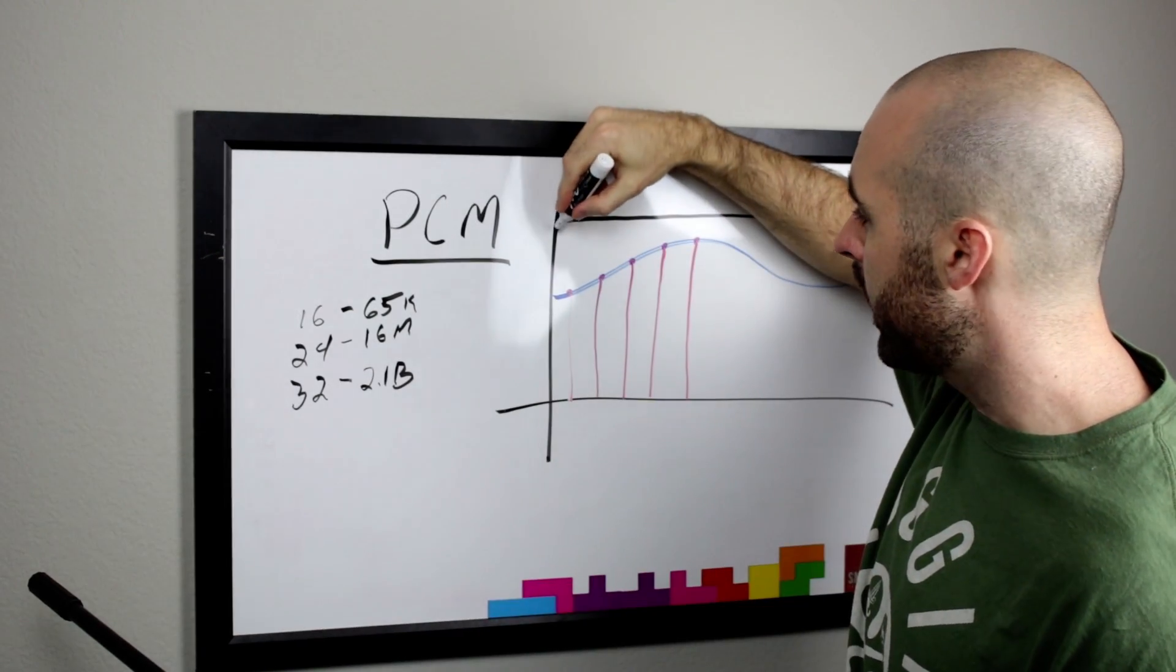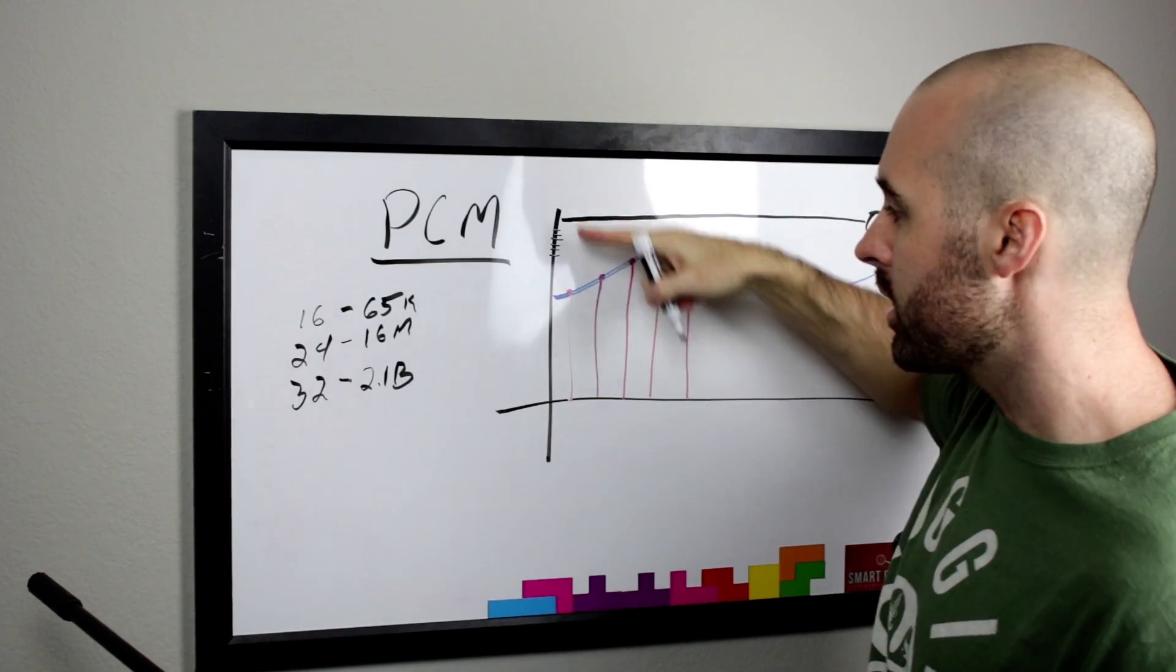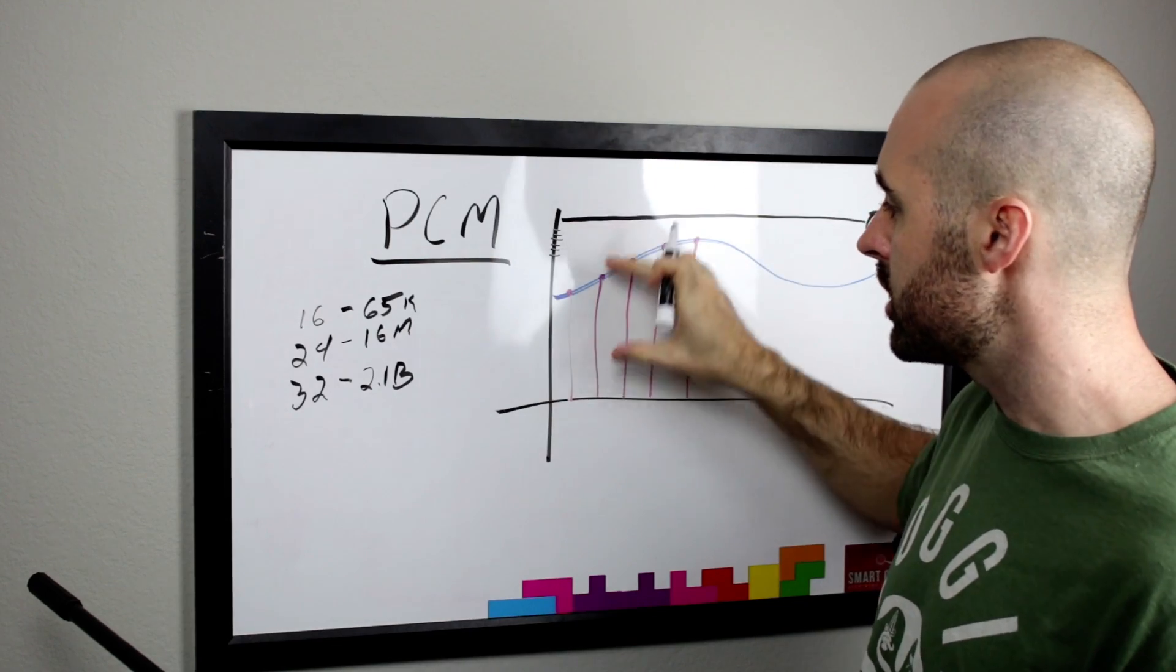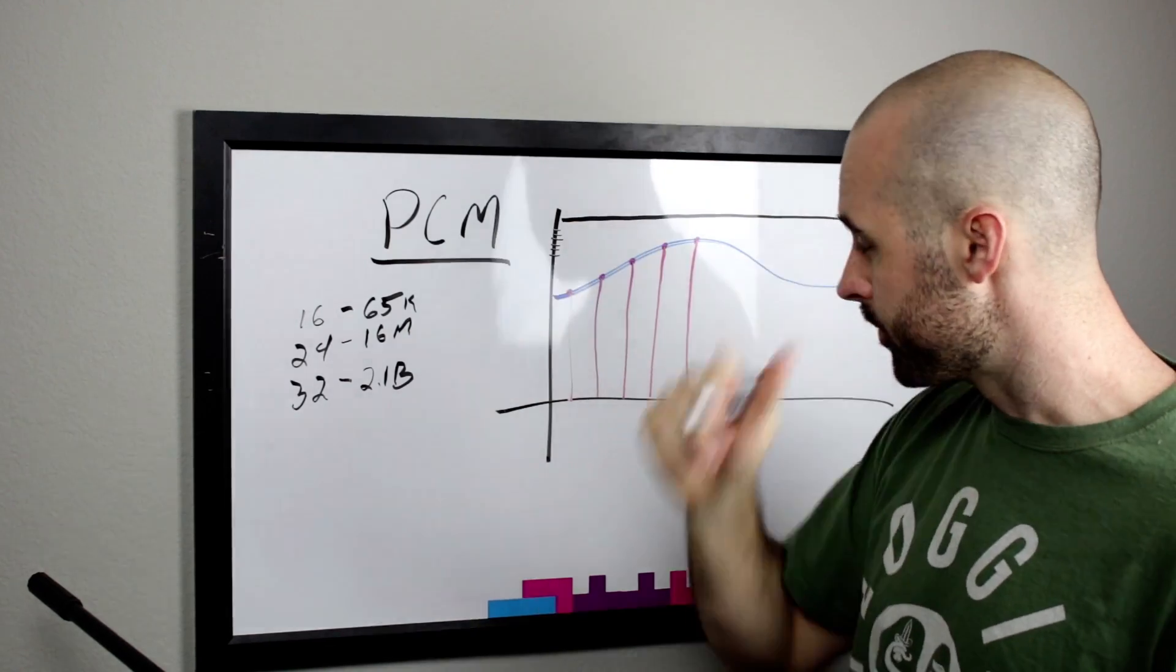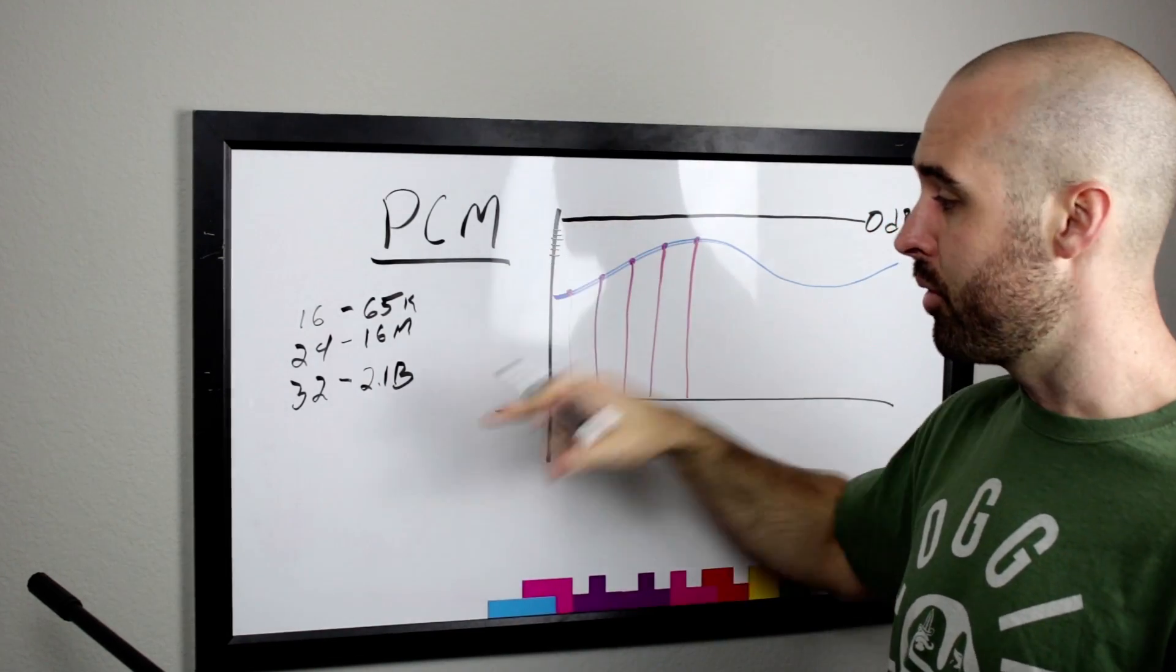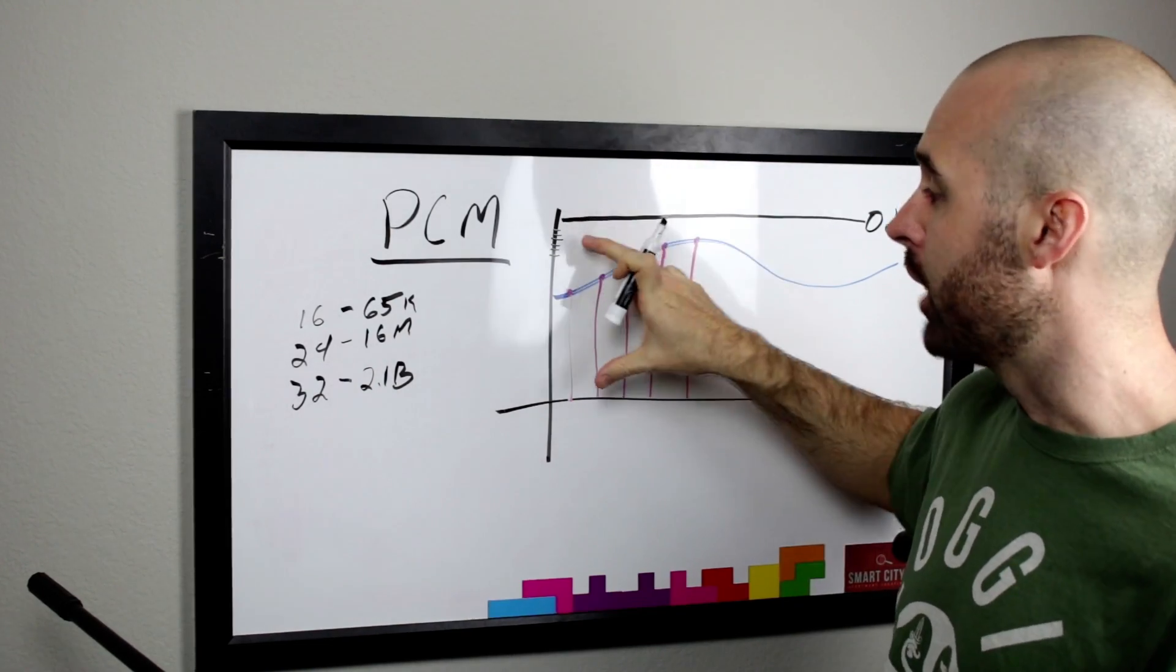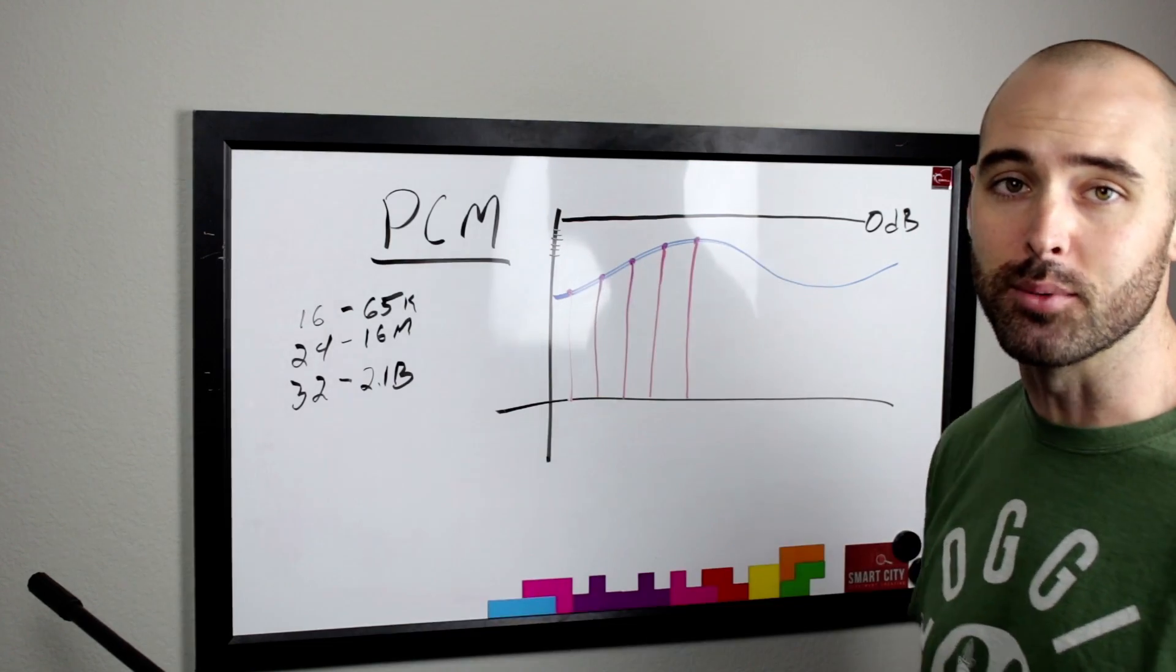So this is where the bit depth comes in. So for 16-bit, we would have 65,000 different values that we can hit on this axis. So this defines the precision of these numbers here on the waveform. So for 24-bit, we would have 16 million, and 32-bit, we would have 2.1 billion different values. So that's an insane amount of precision to hit these values on the waveform.